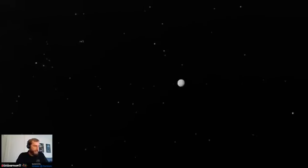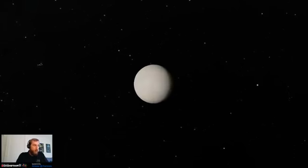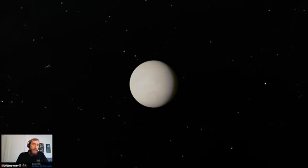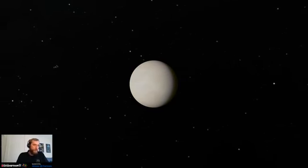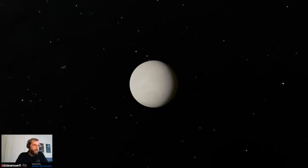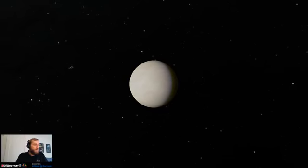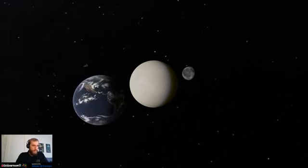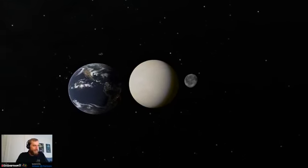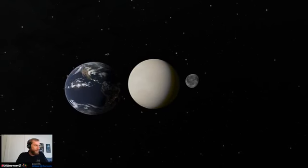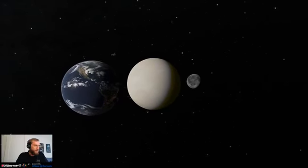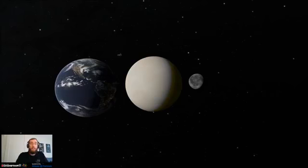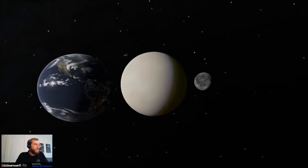Now, Venus is sometimes called Earth's sister planet because the two are about the same size. And if we bring that model of the Earth and Moon here to join us on Venus, we'll see that the Earth and Venus are almost exactly the same size. That's kind of where the similarities end. We don't have so much in common with our sister planet.